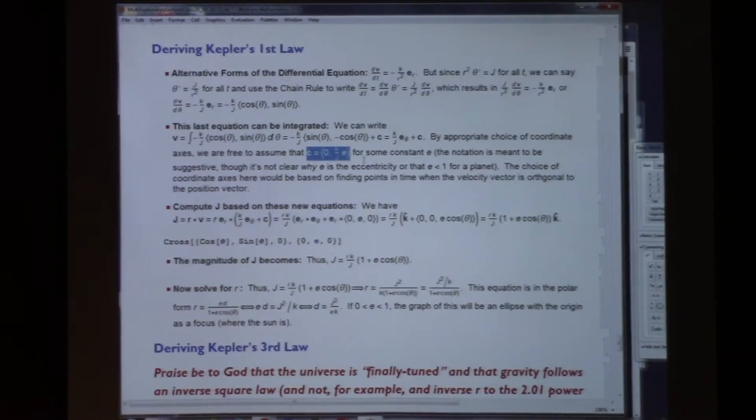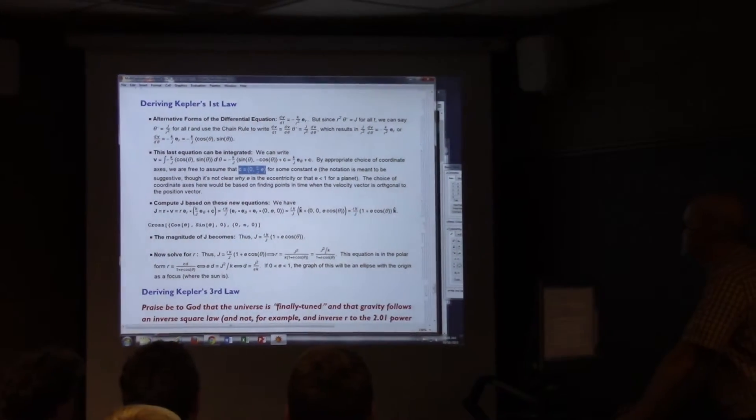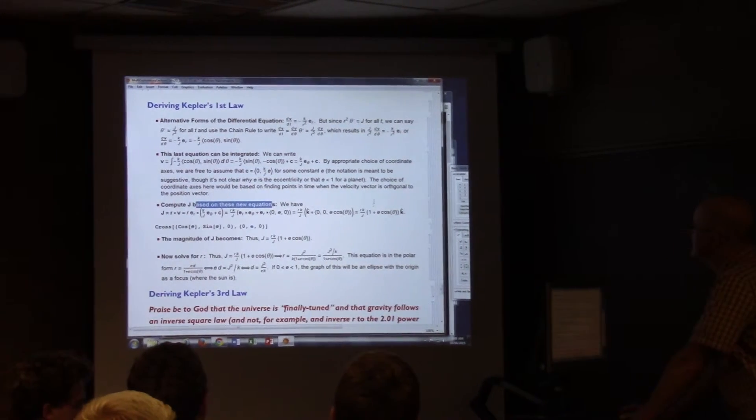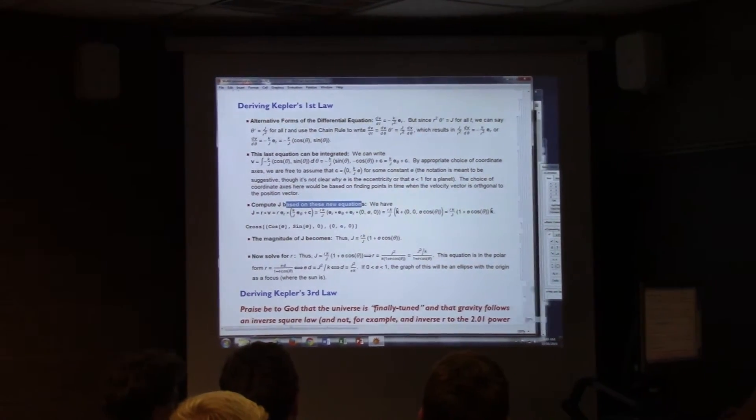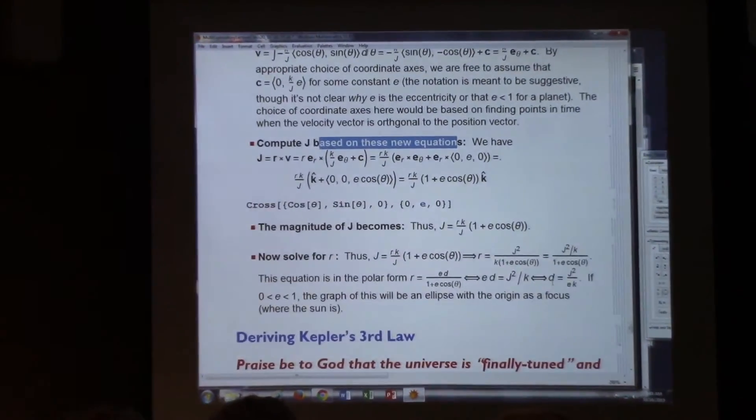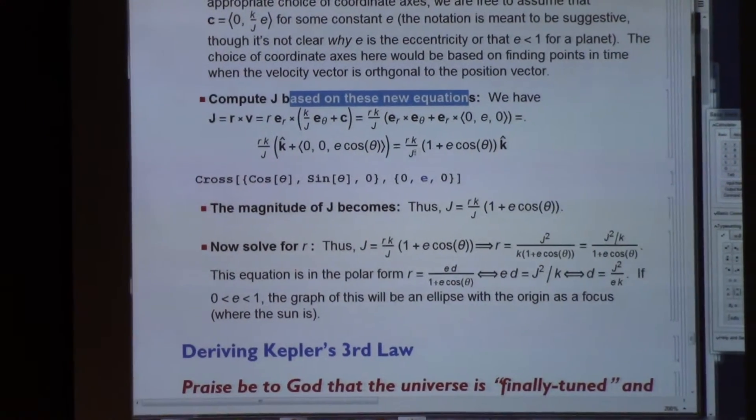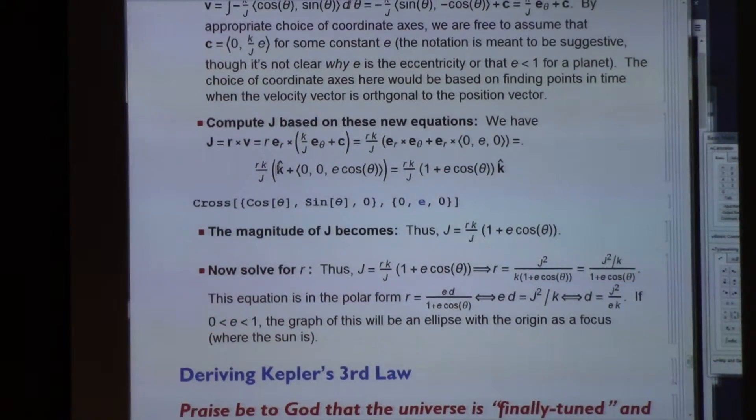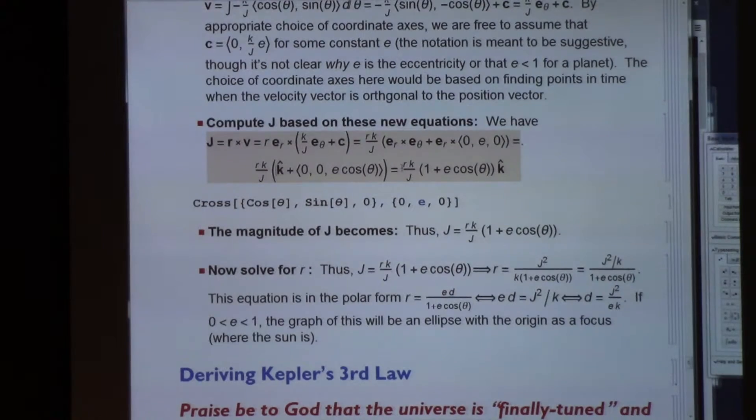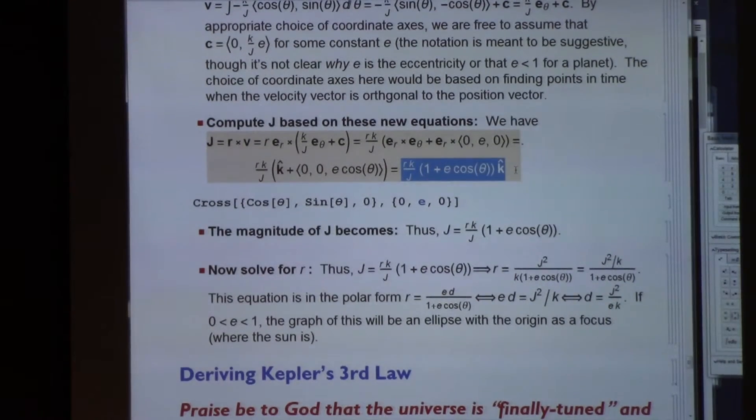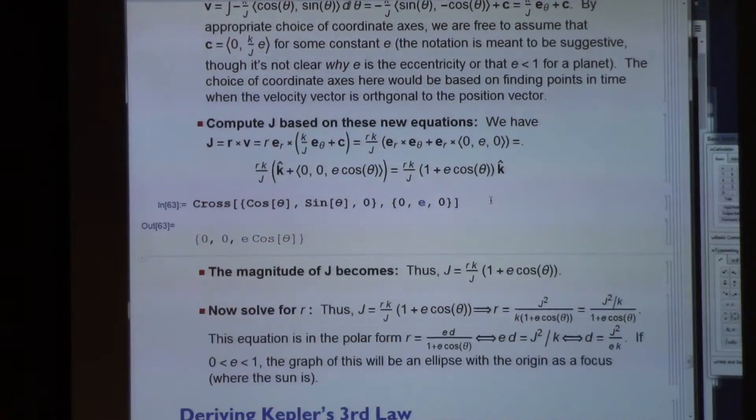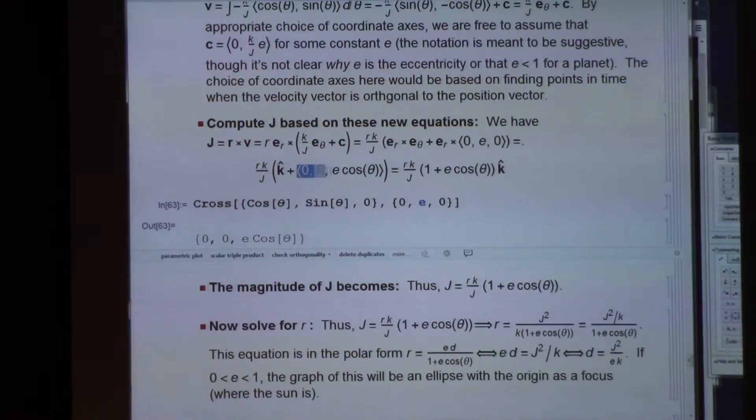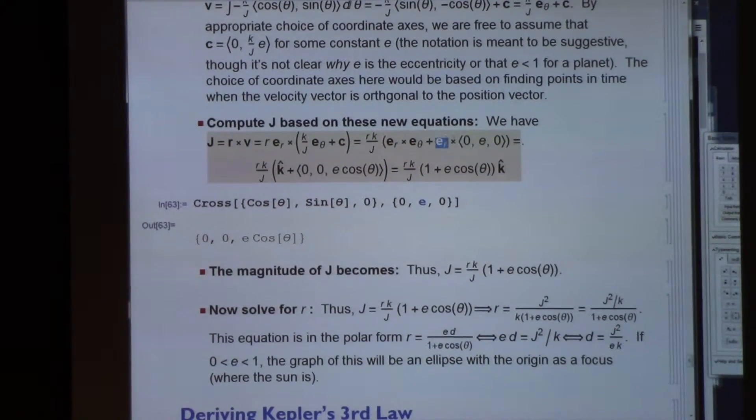I think I need to keep going and not take questions here so we can get as far as we can. It turns out you can compute j based on these new equations and based on thinking about cross products and the formula for cross products. And you get that j actually equals this. The vector j, in terms of theta. And by the way, I did the cross product calculation here with the Mathematica, and I confirmed this was true or this crossed this.